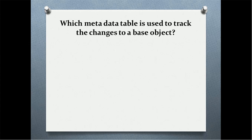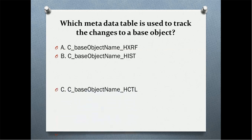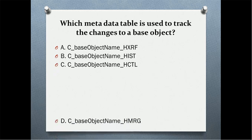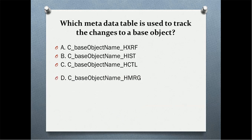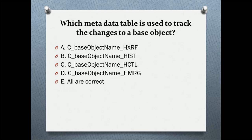Which metadata table is used to track the changes to a base object? The options are: HXRF — that is the history XRF table; the HIS table; HCTL — the history control table; HMRG — the history merge table; and all are correct. The correct answer is all are correct.